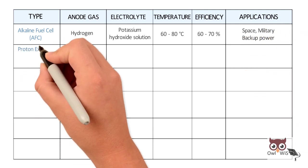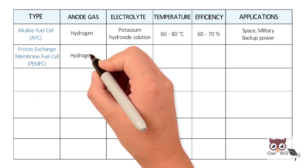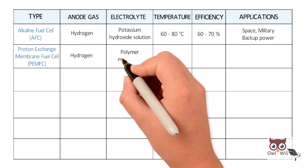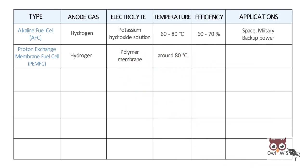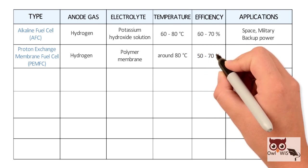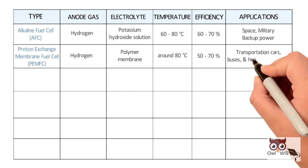Proton exchange membrane fuel cell, PEMFC. Hydrogen is used as anode gas. Polymer membrane electrolyte, with working temperature around 80 degree Celsius. Efficiency is 50 to 70 percent. Applications in transportation such as cars, buses and heavy duty trucks.